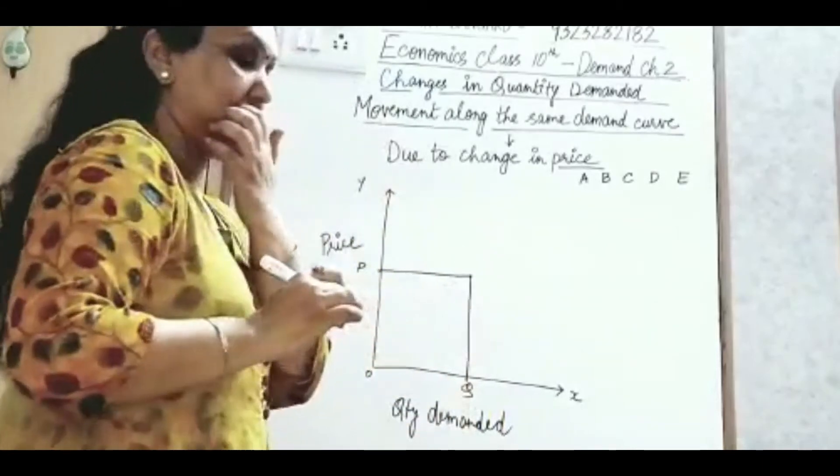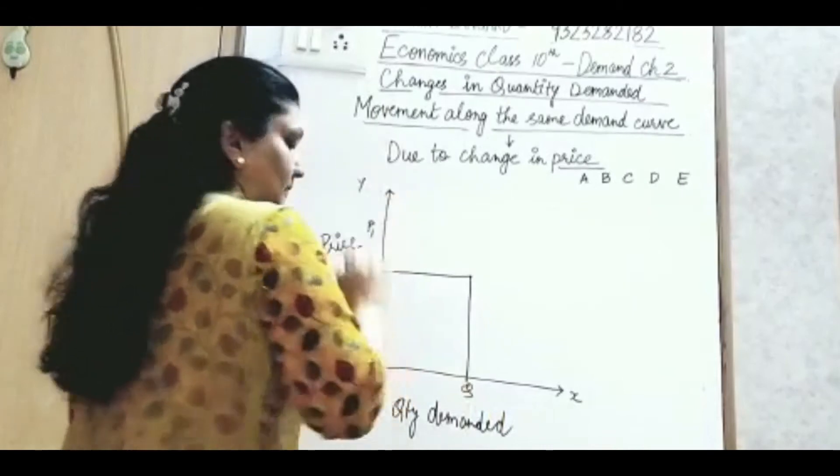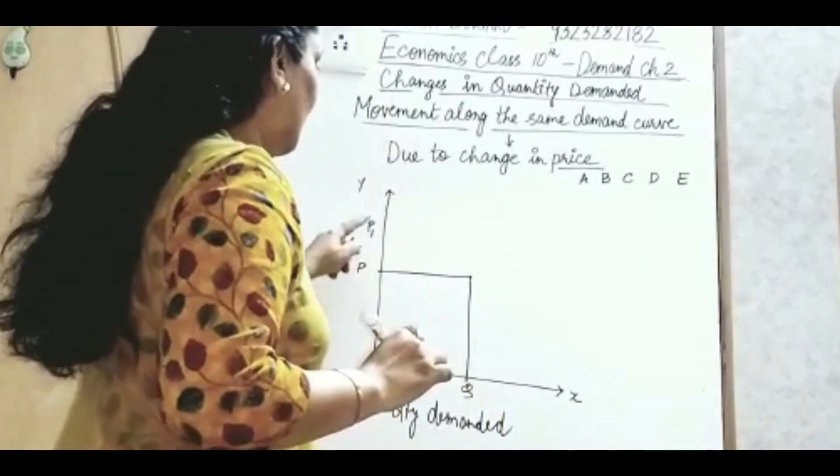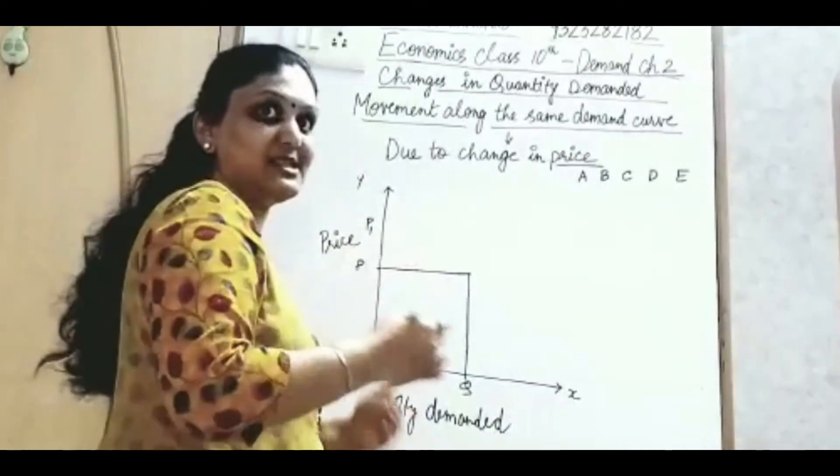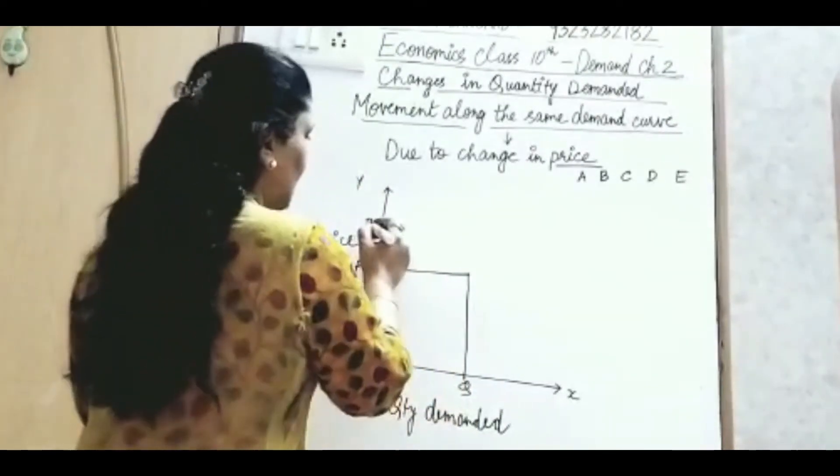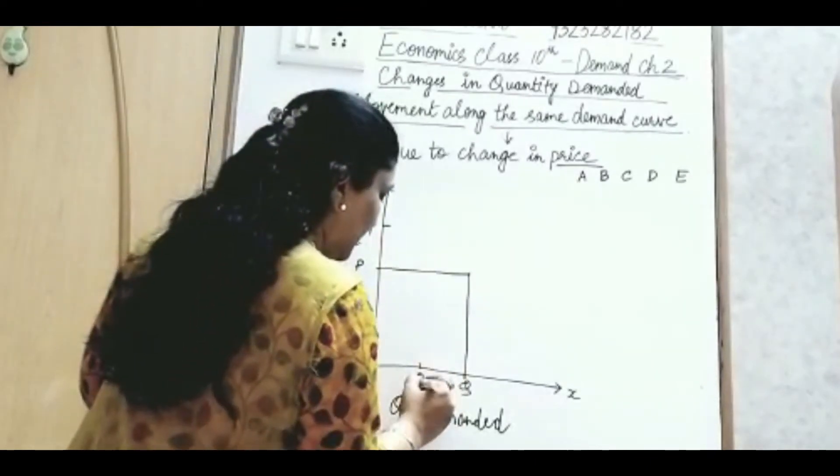P price per Q quantity. Now price increases, P1 होती है price. Price increase होके P1 होती है. So quantity demanded कम होगी, क्योंकि price बढ़ी है. Relation तो inverse ही है, indirect relationship. तो price होगी है P1, तो quantity demanded घटके होगी Q1.